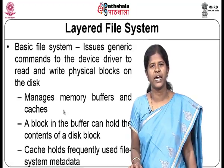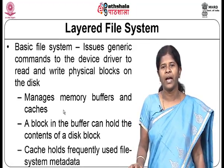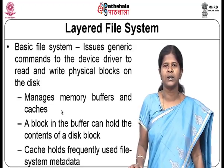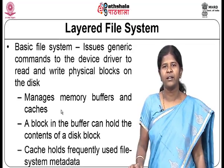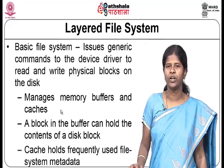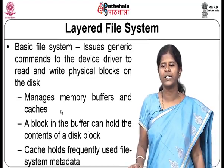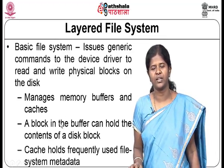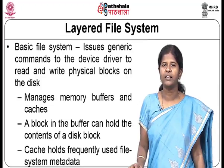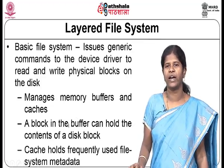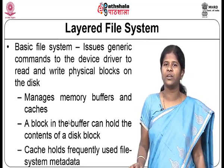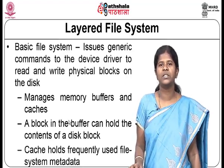The basic file system also manages memory buffers and caches maintained by the operating system in main memory. A block in the buffer cache can hold the contents of a disk block. Whatever is read from the disk is copied onto these buffers, and they can be used later if there is a cache hit. A cache is also maintained which holds frequently used file system metadata, such as the owner of the file, size of the file, or the file control block.